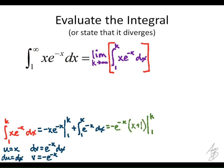So we end up with, and I kind of skipped over a step here again. I factored out the e to the negative x here and the e to the negative x that I would get here. So we have negative e to the negative x times x plus 1 evaluated from 1 to k.